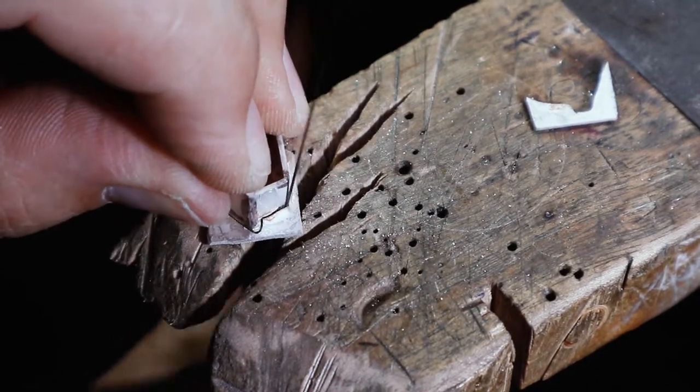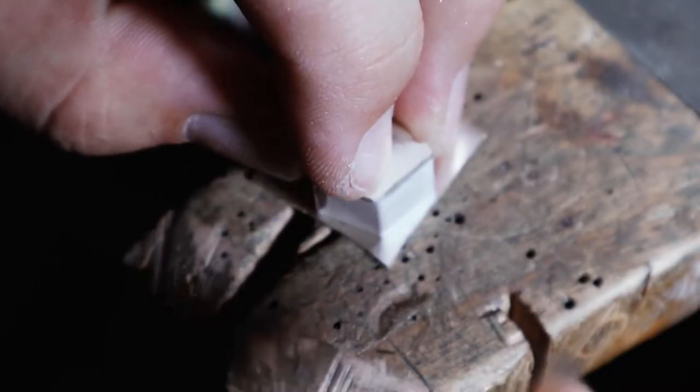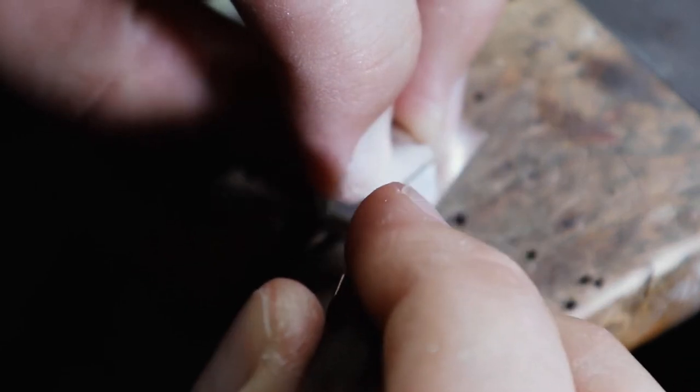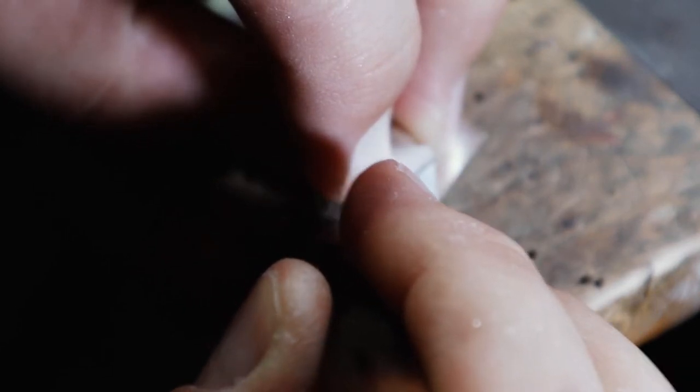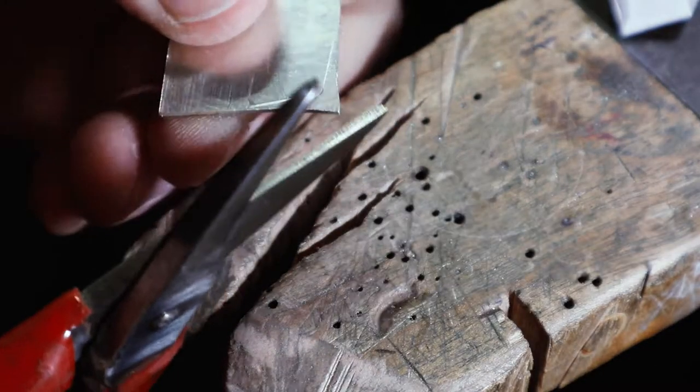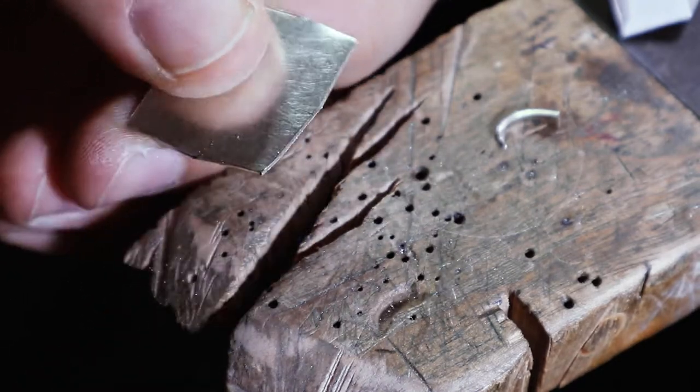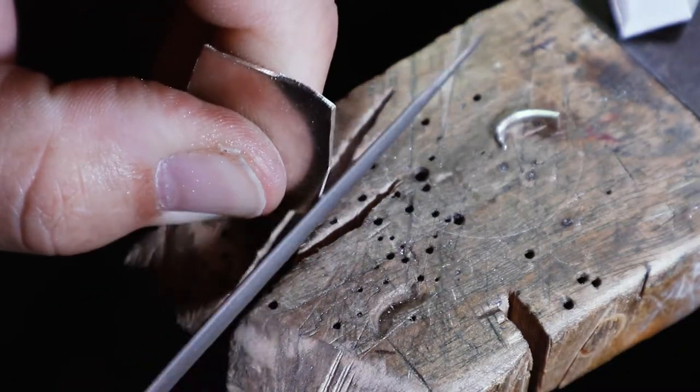Once the back plate has been soldered on, I clean off the majority of the excess, leaving a little lip, and now I'm cutting the front plate. Because the roof has a slight overhang, I need to mark the angle of that roof and then trim the silver so that I can get a nice tight fit on the inside and still have the overhang.